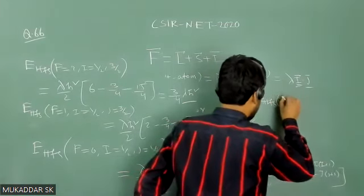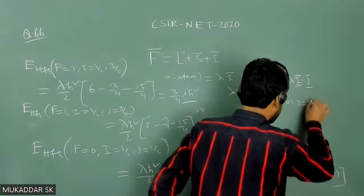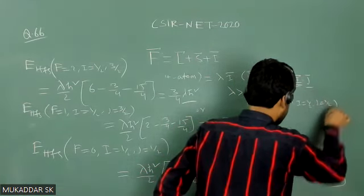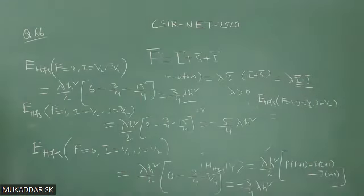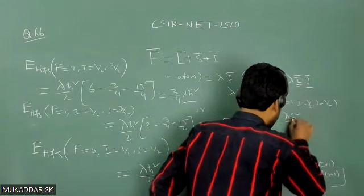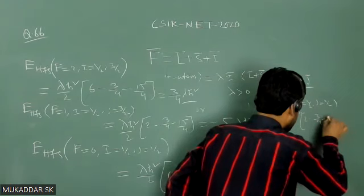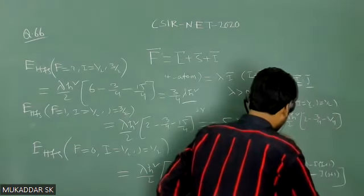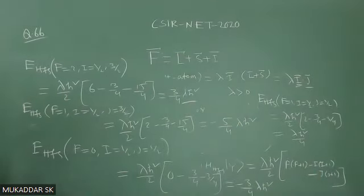The last combination is F = 1, arising from I = 1/2 and J = 1/2. Calculating: E_HFS = (λℏ²/2)[F(F+1) − I(I+1) − J(J+1)] = (λℏ²/2)[2 − 3/4 − 3/4], which provides E_HFS = (λℏ²/4).